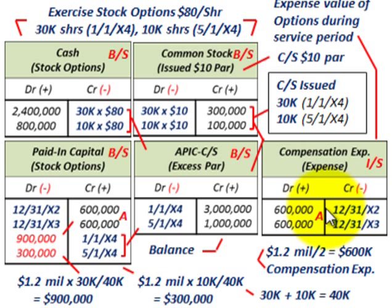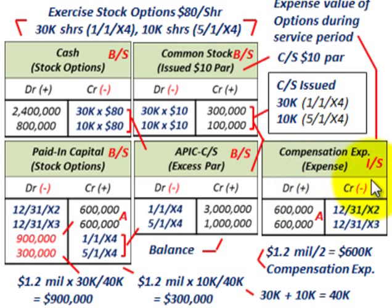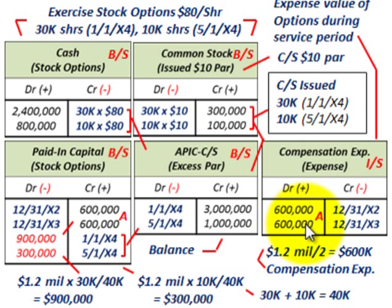For each year of the two-year vesting period, since services are provided equally over those two years, we divide the $1.2 million estimated expense by two and allocate $600,000 per year as compensation expense on the income statement. At the end of the first vesting year, 12/31/X2, we debit compensation expense for $600,000. At the end of the second vesting year, 12/31/X3, we debit compensation expense for another $600,000 — recognizing the total $1.2 million estimated expense before any stock options are actually exercised.